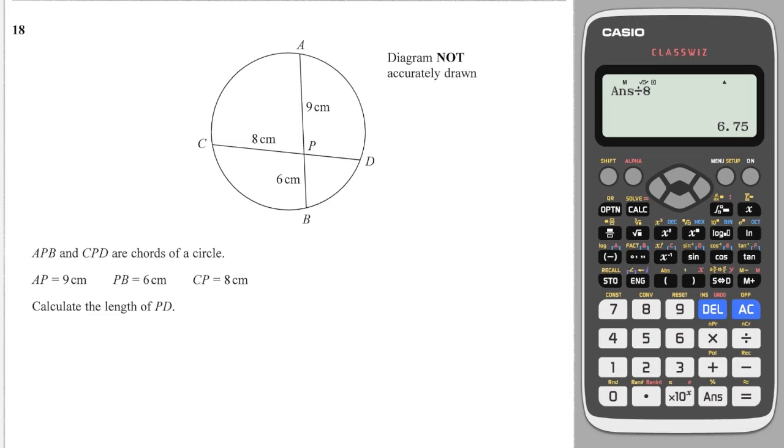The formula which you need for intersecting chords, which is not given, is that A to the intersection point times B to the intersection point is equal to C to the intersection point times D to the intersection point. So we start with A to P, which is 9, and we'll times that by B to P, which is 6.